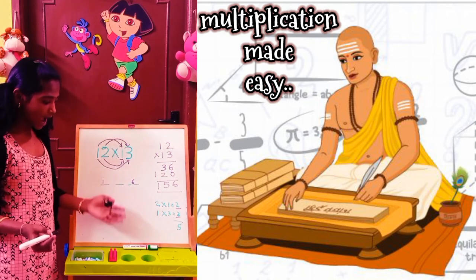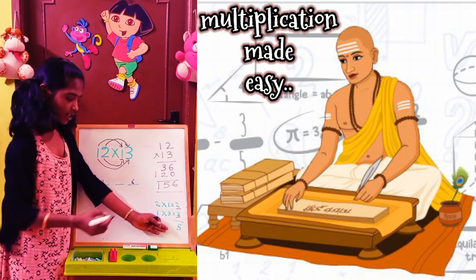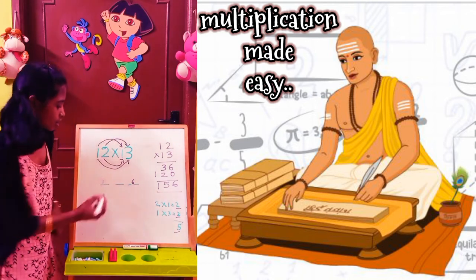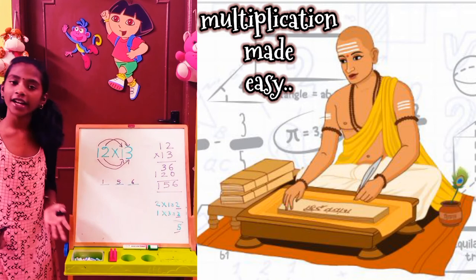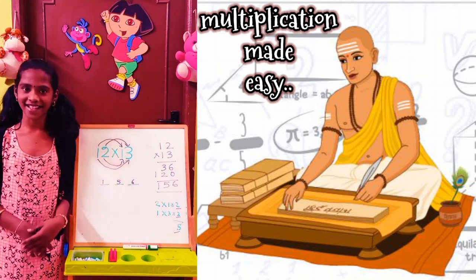Now we need to add 2 plus 3 that gives 5. So we write 5. The final answer is 156.